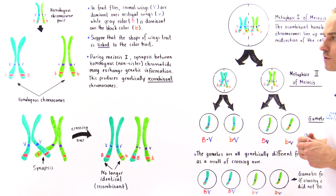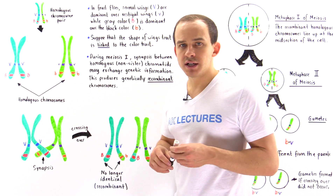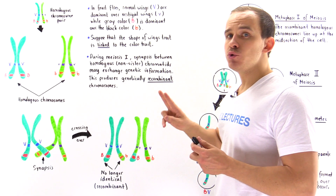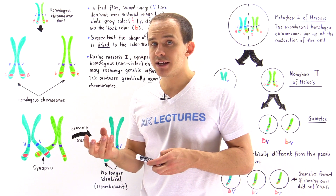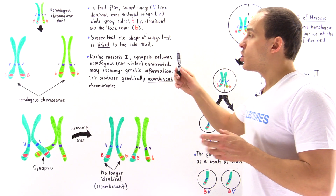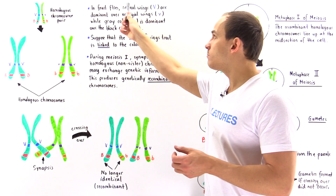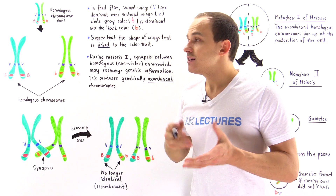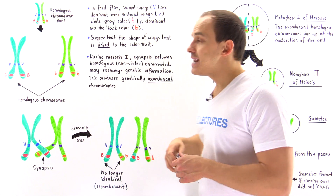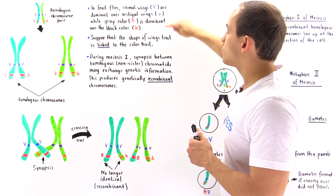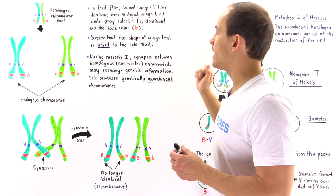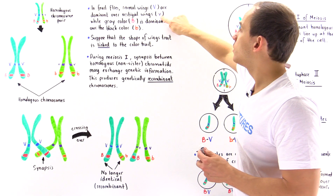In our discussion of crossing over, we're going to focus on the fruit fly. In fruit flies, we're going to study two different traits: the structure of the wings and the color of the fruit fly. We have two types of wings — normal wings and vestigial wings — and two colors — gray and black. Normal wings, designated with uppercase V, is dominant over the recessive vestigial wing, designated with lowercase V.